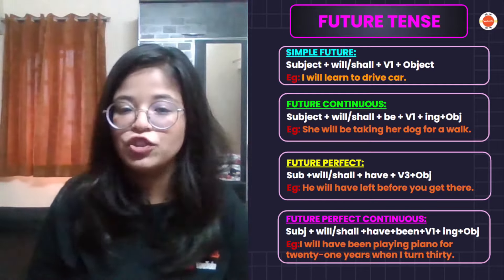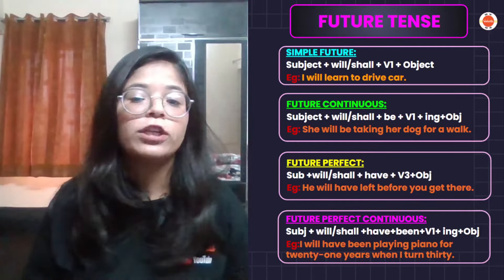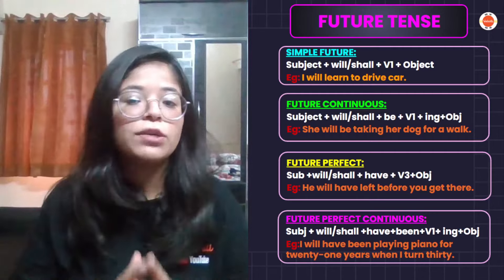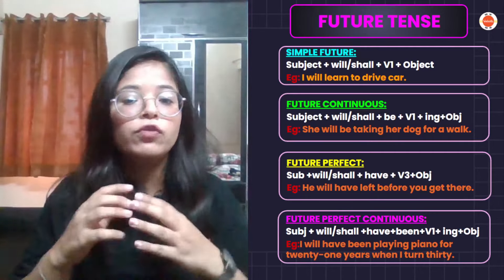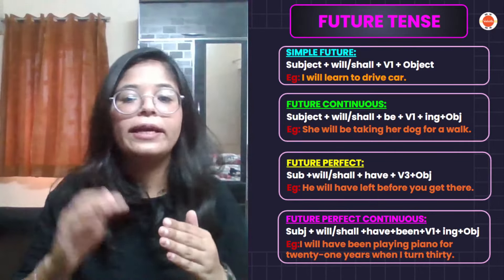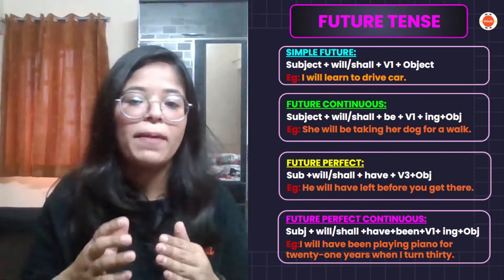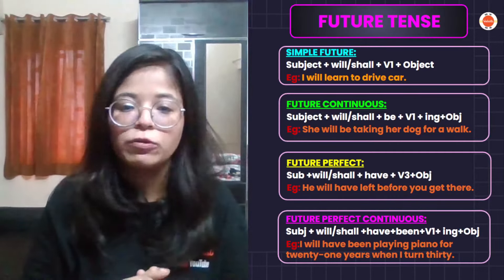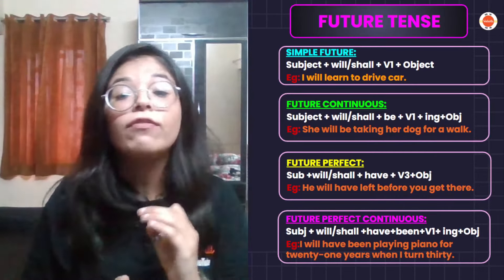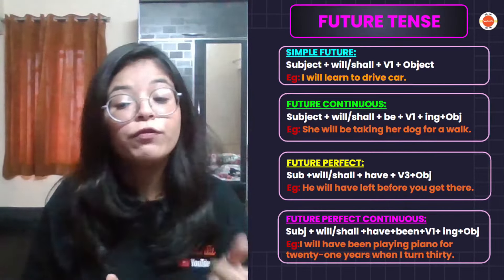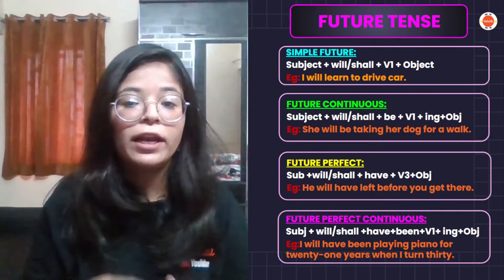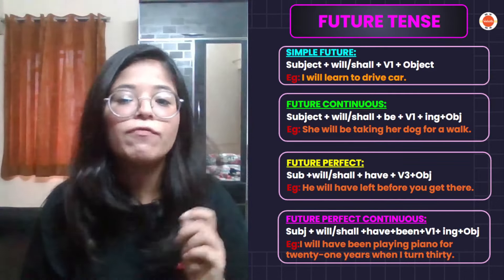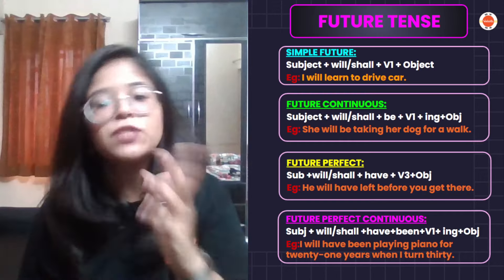The third sub-type is future perfect tense. When you say that in the future, at a certain time, your action will absolutely complete. For example, he will have left before you get there — meaning before you come, it will be gone. In this way, you use will or shall with have, plus been.